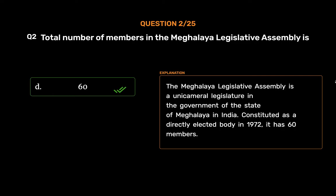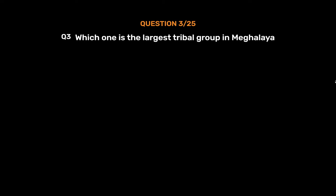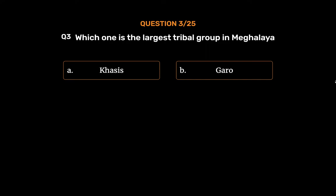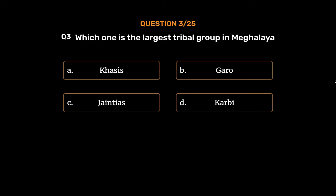Question number 3. Which one is the largest tribal group in Meghalaya? Option A: Khasis. Option B: Garo. Option C: Jaintias. Option D: Karbi.